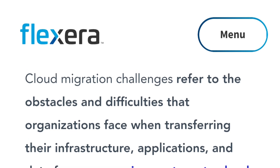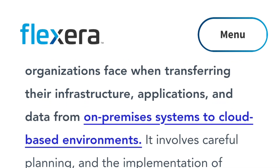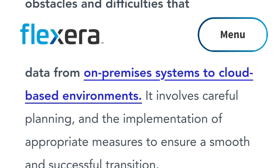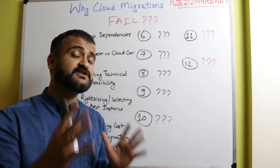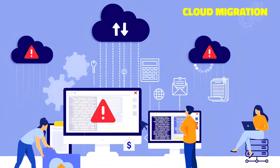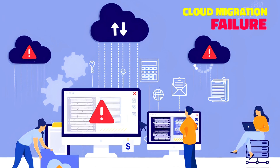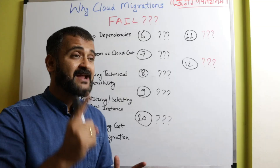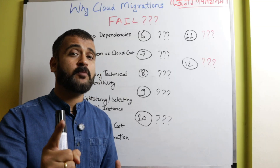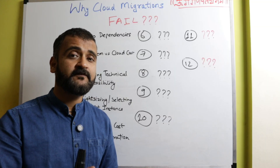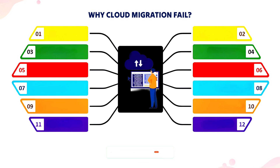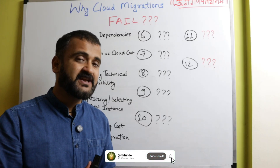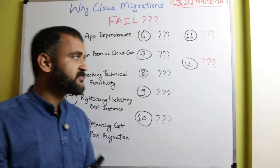Friends, Flexra recently released a state of the cloud report where it talked about the most prominent constraints or the challenges which we face and due to which most of the cloud migration projects fail. Those reasons are the topic of this particular video, and we'll understand all these 12 reasons one by one and what could be some steps through which we could mitigate them. So let's start.